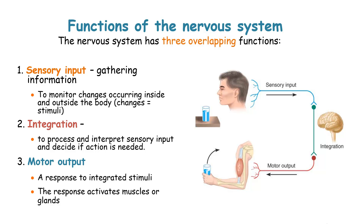The sensory input involves the gathering of information from other organs either inside or outside of the body. Integration, on the other hand, processes and interprets the sensory input that has been directed to the central nervous system and decides which action needs to be taken.